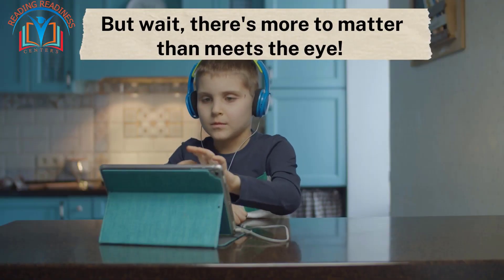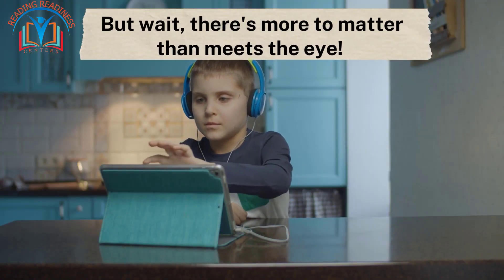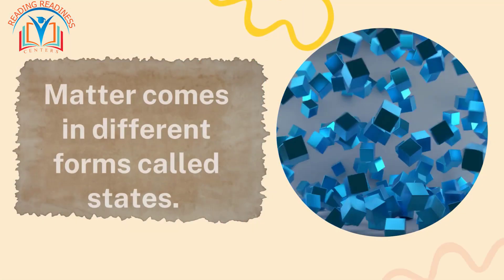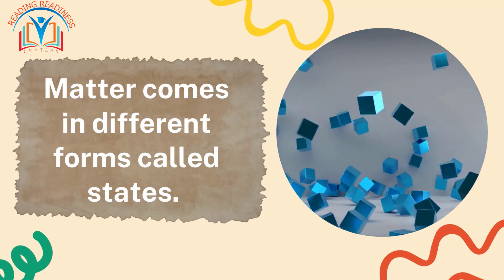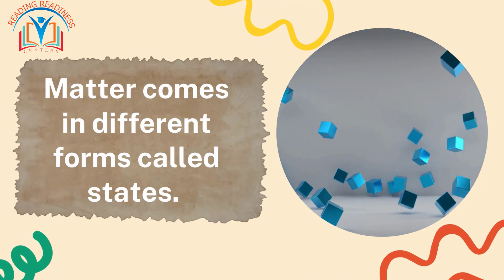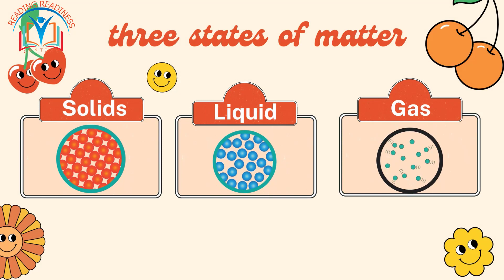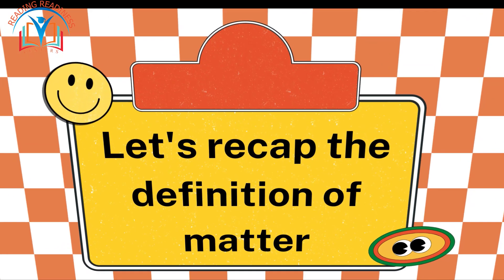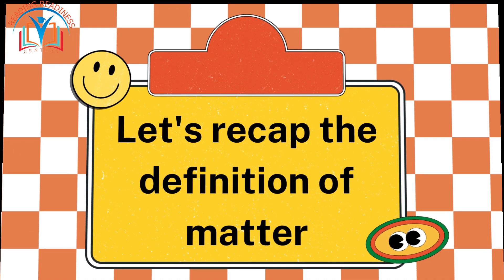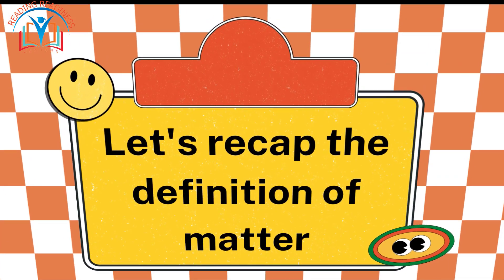But wait, there's more to matter than meets the eye. As you learned in the previous grade, it comes in different forms called states. There are three main states: solids, liquids, and gases. Prepare to be amazed — let's recap!